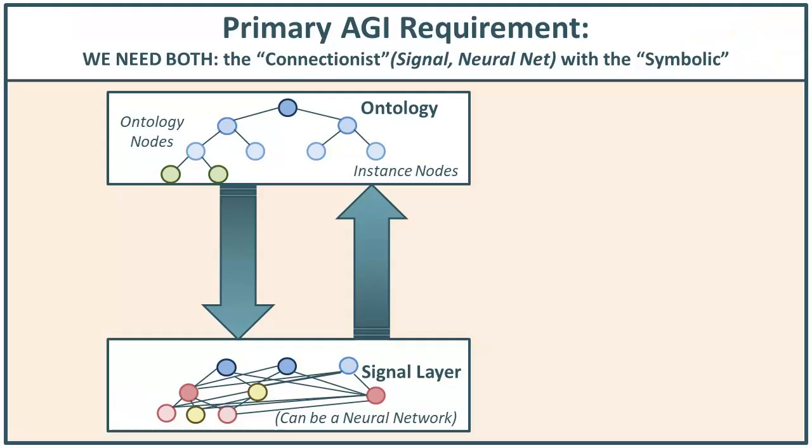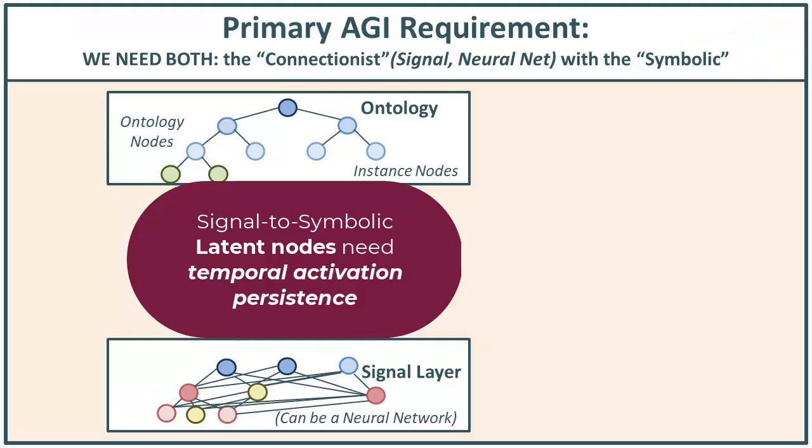The essential problem — the thing that we must address to get this signal-to-symbolic connection going — is that the latent nodes have to have temporal persistence. Right now we've got latent nodes that blink on and off. If you're an AGI researcher wanting to take steps that could actually land you some fame and glory, the field is ripe right now for new steps.